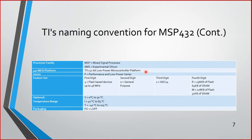MSP-432 is a 32-bit low-power microcontroller platform with Cortex-M4 as the core. MSP-430 is a 16-bit processor used for 16-bit operation. Generally, MSP mixed microcontrollers are used for low power applications. The series letter P stands for performance and low power series — it has good performance even though it is low power.